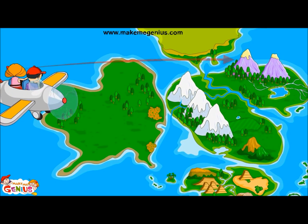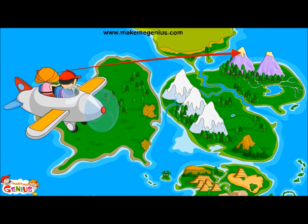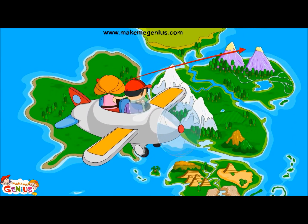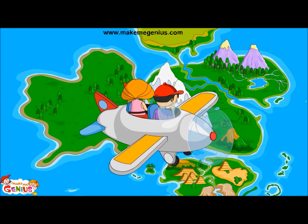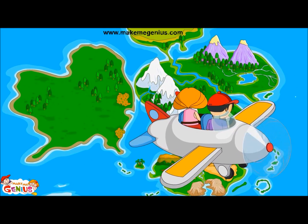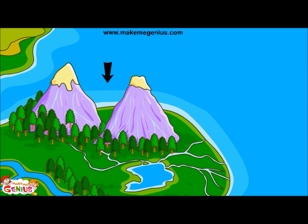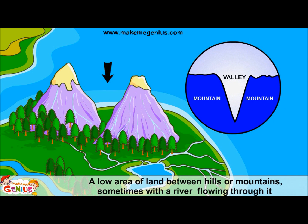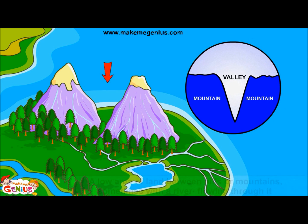Can you see the low area between two mountains? Yes, but what is the name of this landform? This is known as a valley. It is a low land area between two mountains.